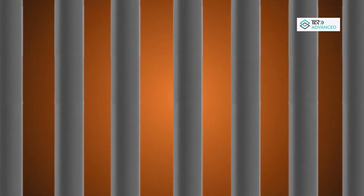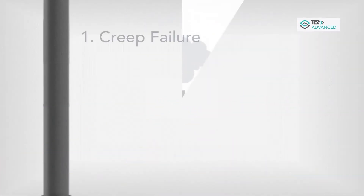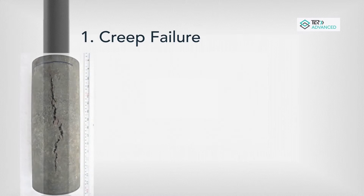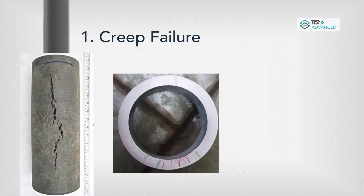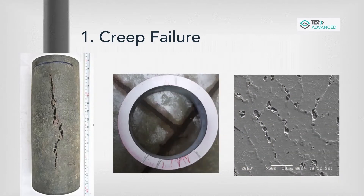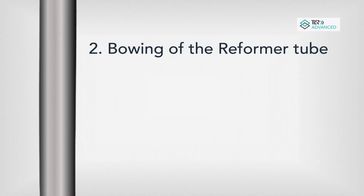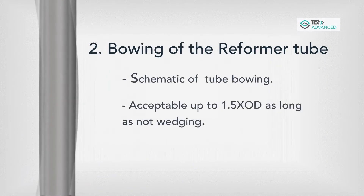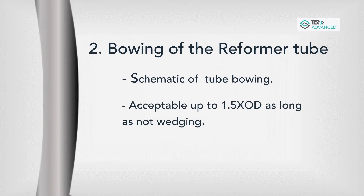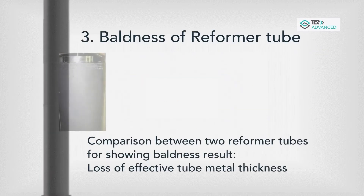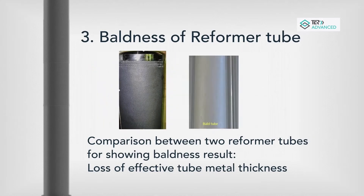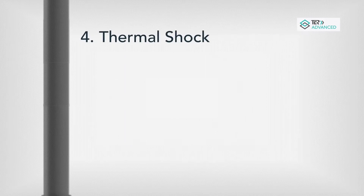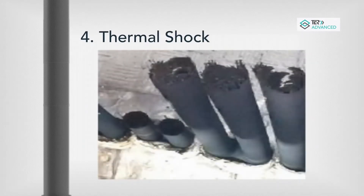Reformer tubes gradually face several problems. Number one: creep failure — as reformer usage increases, small unseen creeps develop within the reformer resulting in voids within the tube surface. Number two: bowing of reformer tube — this happens due to thermal expansion and contraction in succession or due to improper heat distribution damaging the support system. Number three: thinning of reformer tube — loss of effective tube metal thickness. Number four: thermal shock — sudden change in temperature or process upsets causes thermal shock that may result in abrupt catastrophic failure of tubes.